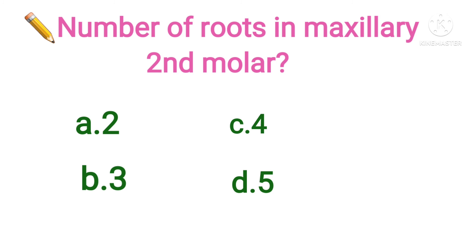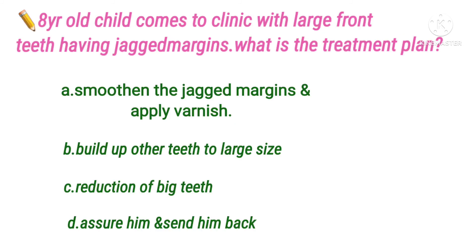Next question: the number of roots in the maxillary second molar is — option A 2, B 3, C 4, D 5. The answer is option B, 3 roots.